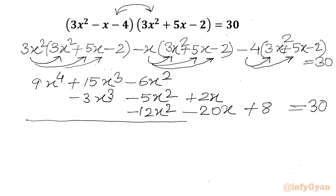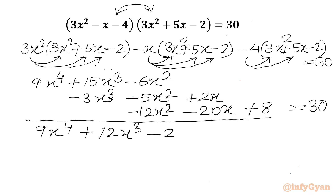Now we will add the like terms. We get 9x⁴, then 15 - 3 = 12, so 12x³. Then -6 - 5 - 12 = -23x². Then +2 - 20 = -18x. Plus 8, equal to 30.